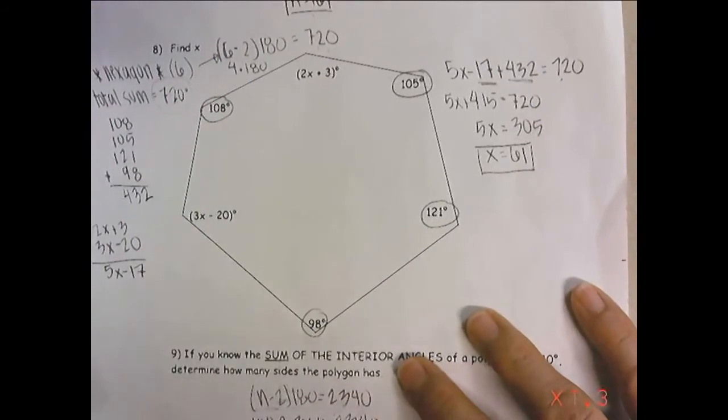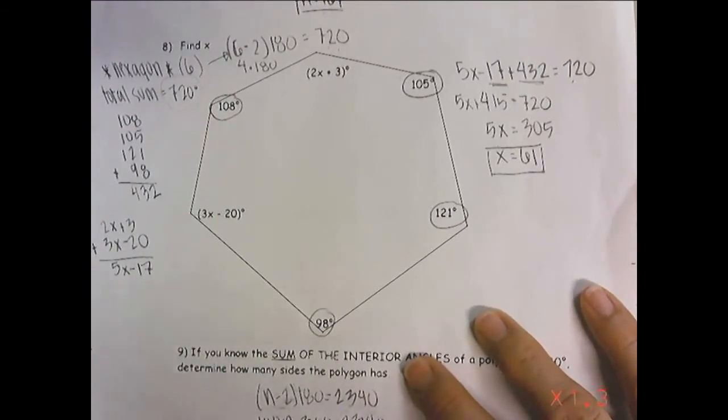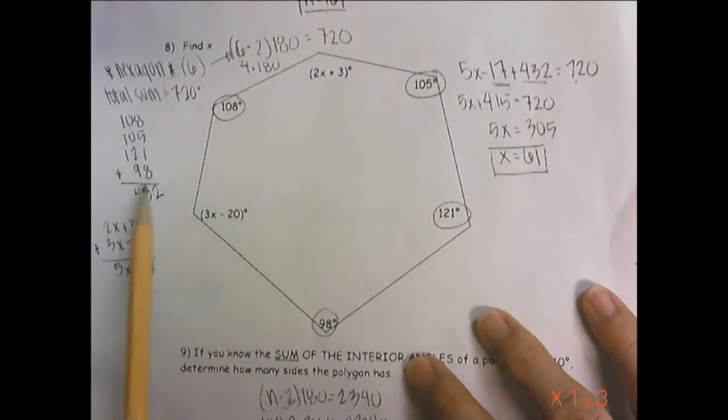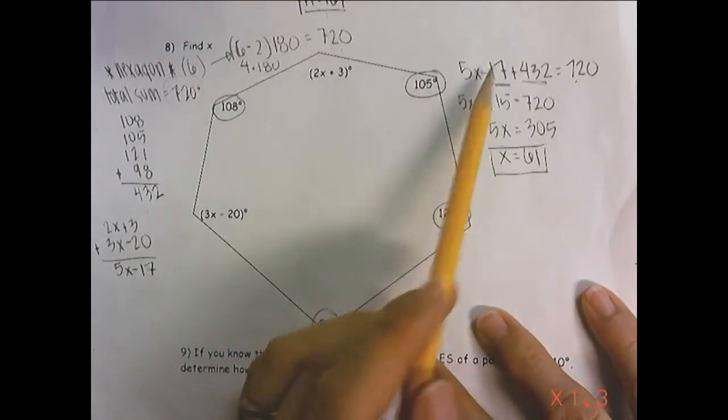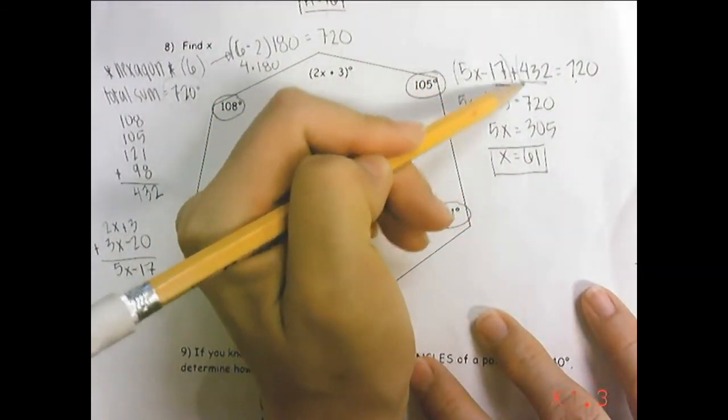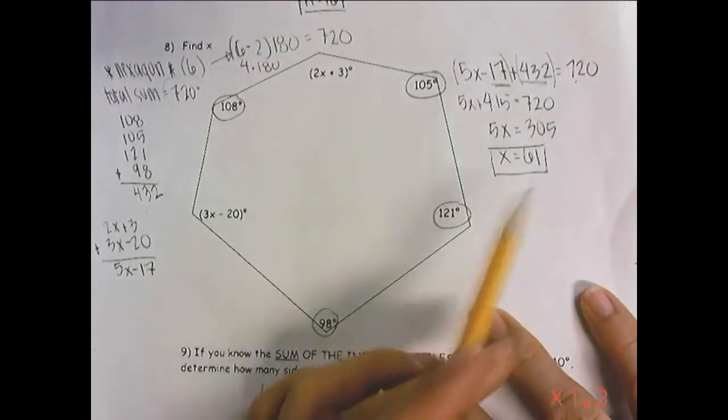So you'll notice over here is where I did my adding. I took all my numbers that were just by themselves and added them together. That's where I got the 432. And then I added my two expressions, and that's where I got 5x minus 17. And over here, I added the two together, and then solved for x.